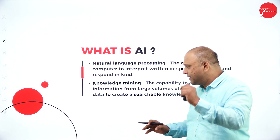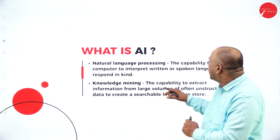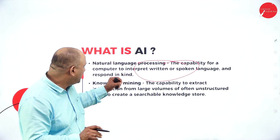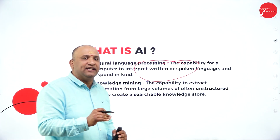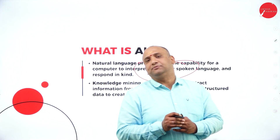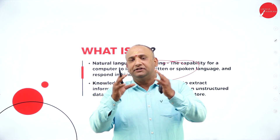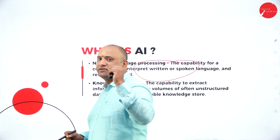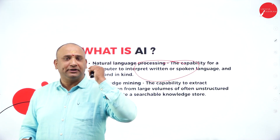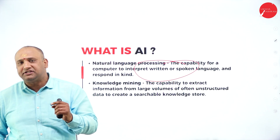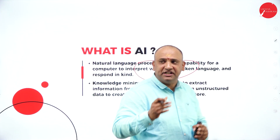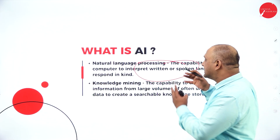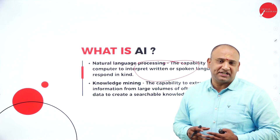AI is basically on two parts. One is natural language processing — the capability of a computer to interpret written or spoken language and respond. Now we know that in India there are thousands of languages spoken across the country, and across the globe there are hundreds of languages. We want the computer to understand the same language, the same rhythm and diction. That's exactly where natural language processing comes into picture.